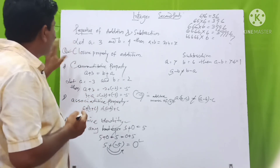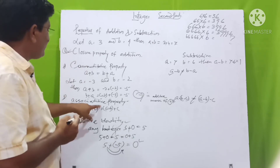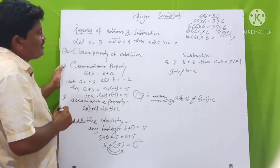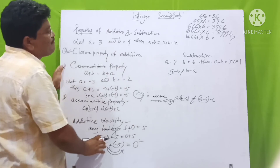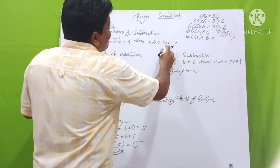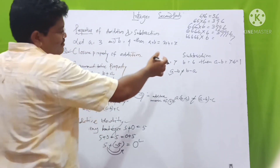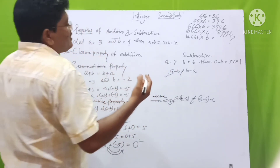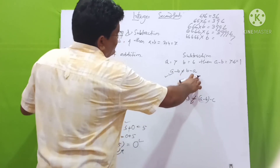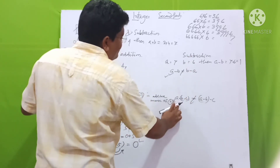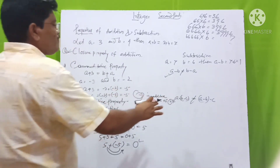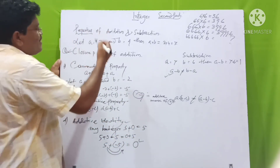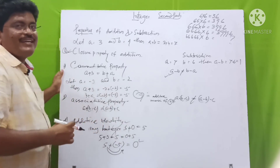This property — closure property, commutative property, associative property, and additive property — all four properties are obeyed in addition. But in subtraction, only closure property is closed under subtraction. Commutative property is not valid for subtraction, and associative property also is not valid for subtraction. Next part, we discuss about multiplication and division. Goodbye. Thank you.